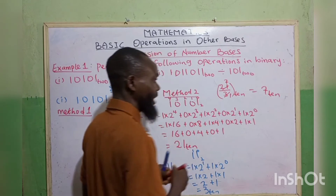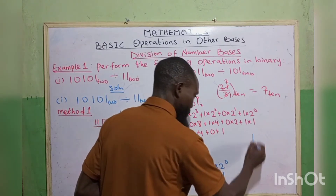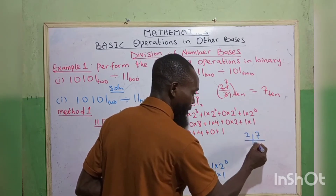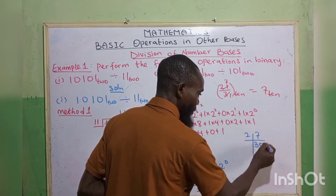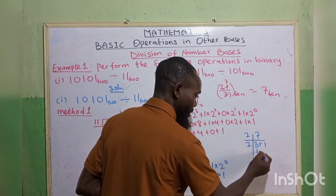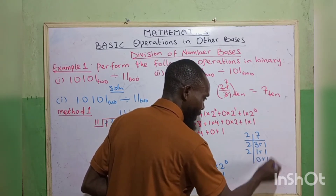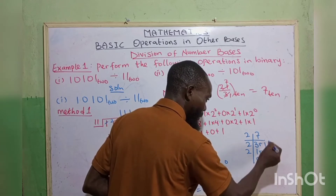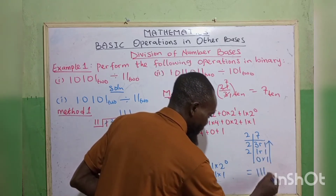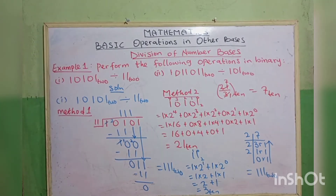So we can now convert our base 10 answer back to base 2. We have 7 in base 2. 2 goes into 7 giving 3, remainder 1. 2 again — 2 goes into 3, giving 1, remainder 1. 2 again — 2 goes into 1, giving 0, remainder 1. We write from bottom up, so our final answer is 111 in base 2. This is the second method.